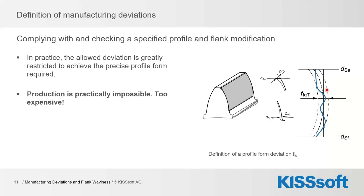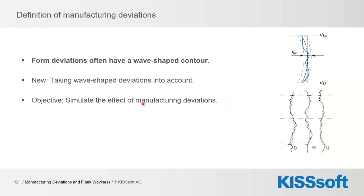One approach seen very often in practice is that designers just reduce the prescribed tolerance range — for example down to quality 2. With that it's clear that whoever produces the gear has to be very exact. The problem is that such prescriptions are practically impossible to fulfill, and in any case everything becomes very expensive. The idea is instead to check how big deviations can be without having a big impact on the wanted behavior of the gear.